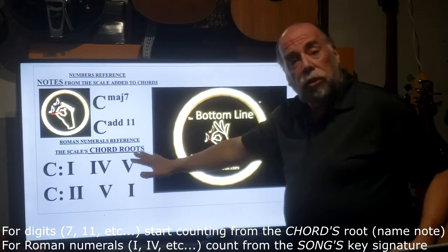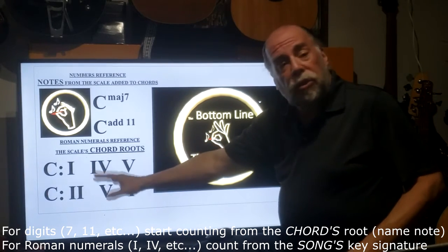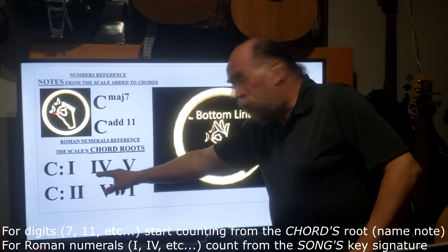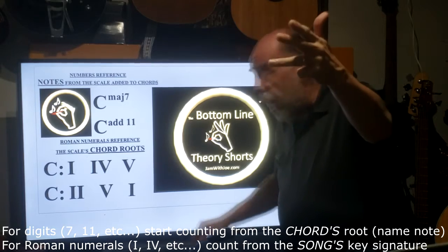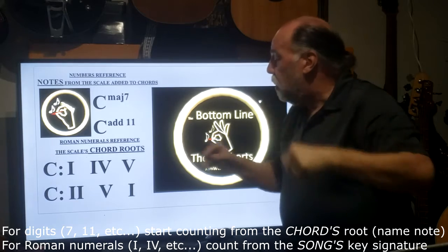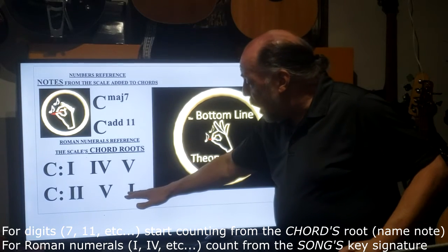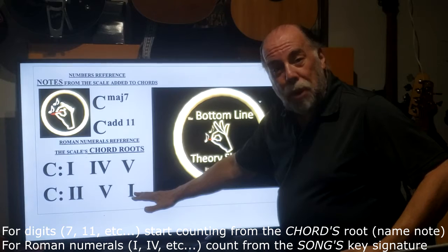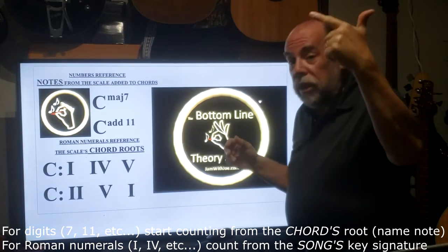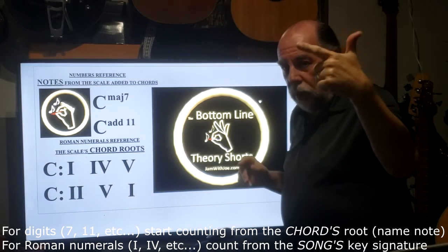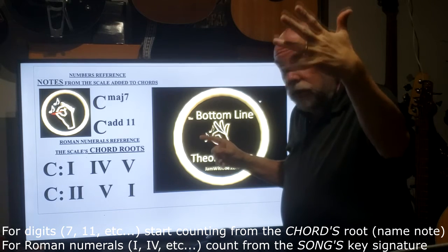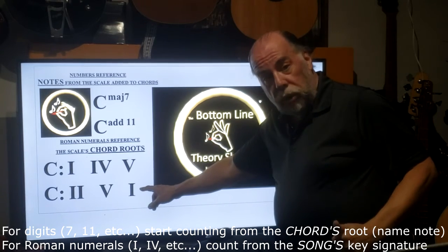Roman numerals reference the scale's chord roots. So in the key of C, a 1-4-5 blues would start on C. The next chord would be C, D, E, F — the fourth is F. And the final chord is the fifth, G. In the jazz 2-5-1 progression in the key of C, you would start on D, then go to the 5 — G chord — and then go to the root C.